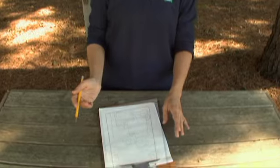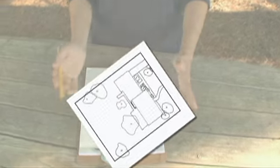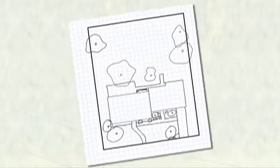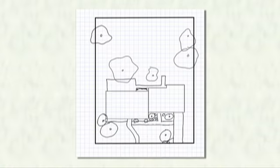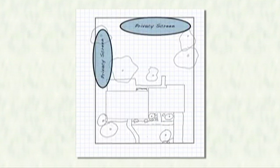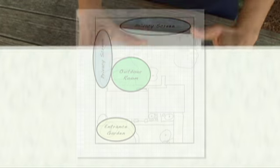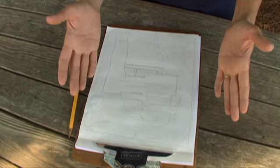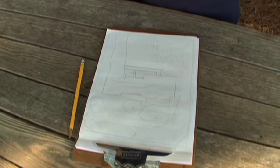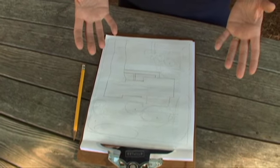So let's take a look back at our landscape plans that we created earlier. On it, we've identified several areas that need plantings, whether for privacy, to create garden rooms, or simply to add beauty to the landscape. Knowing where we need these plantings is a great start — now we just need to identify what types of plantings are needed.